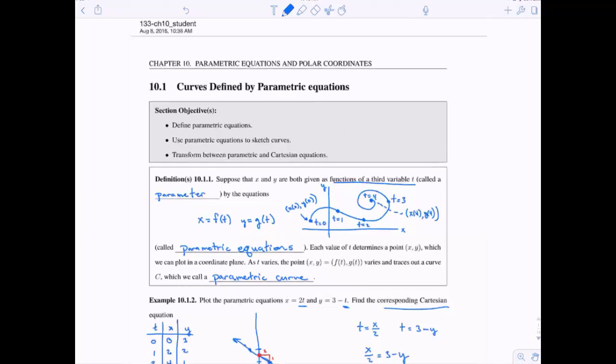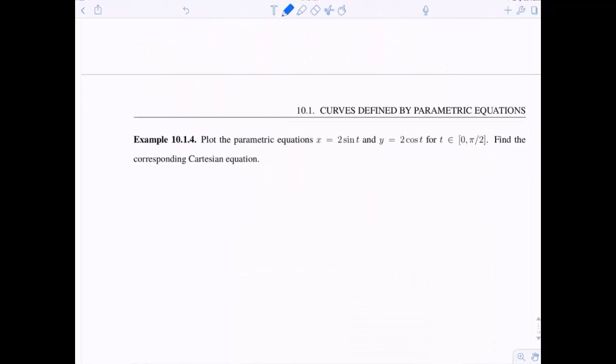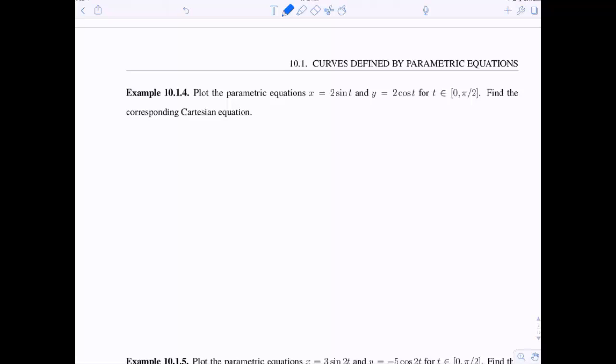Okay. Let's go and do another example with some more initial and terminal points here. We have x is 2 sine t, y is 2 cosine t, and now t ranges between 0 and pi over 2. Find the corresponding Cartesian equations and plot. So again, I'm going to make a table, plug in some different t values.